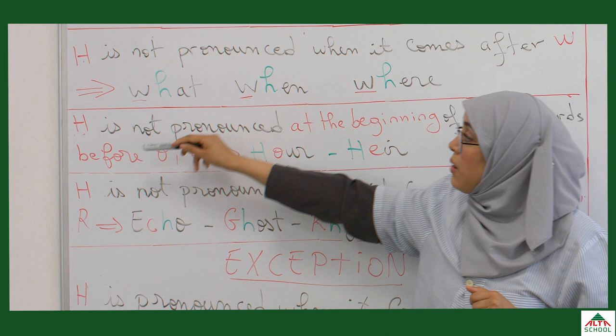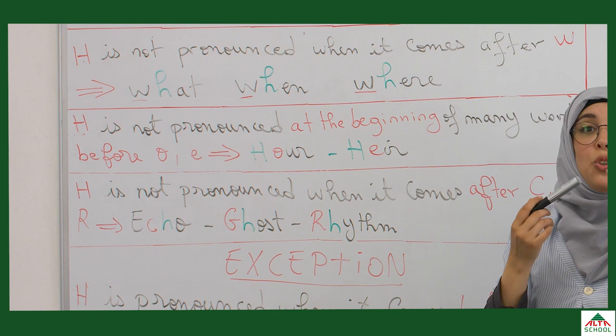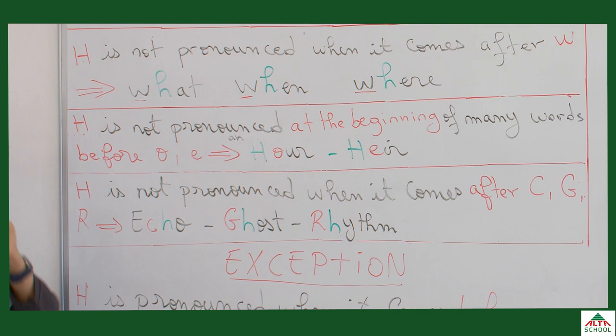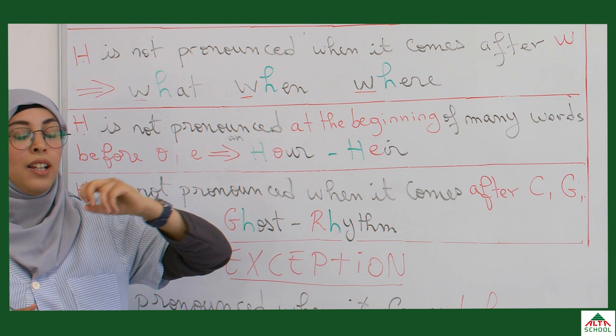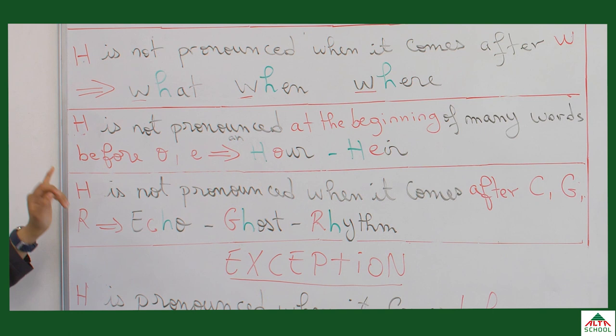The second point is H is not pronounced at the beginning of many words before the letters O and E. For example, we're not going to say 'hour' — we say 'hour'. So if I put the article N here, it's pronounced 'an hour'. Similarly, 'an heir' — for example, in England there will always be an heir to the throne. The H in 'heir' is not pronounced because we have an E after H.